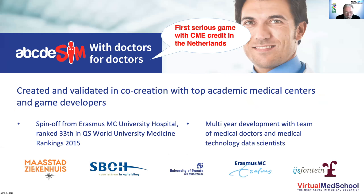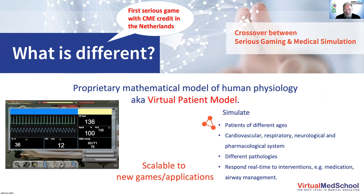What makes ABCDE Sim different from a regular game is that it is a crossover between a serious game and a medical simulation. At the background runs a virtual patient model that simulates physiological behavior. For a patient with a stomach bleed, the heartbeat goes up and blood pressure goes down. If you don't treat the patient correctly and promptly with the right medication, the physiological response differs compared to acting after ten minutes. The patient responds in a real-life-like manner, and there is no easy decision tree—if you try to start with E and work backwards, you will notice it is not beneficial to the patient.